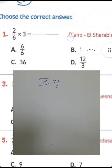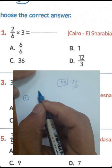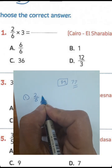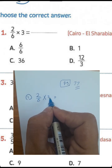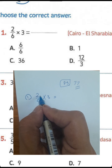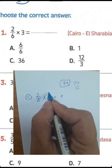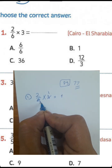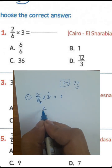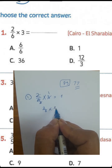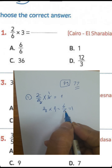Let's look at question number 1 and show you the correct answer. 2 over 6 times 3 — we can simplify it. 3 times 2 equals 6, and 6 divided by 6 equals 1. Or you can write 3 divided by 3 equals 1, and 6 divided by 3 equals 2, and 2 divided by 2 equals 1. Or you can write 2 over 6 times 3 over 1: 3 times 2 equals 6, 1 times 6 equals 6, equal 1.